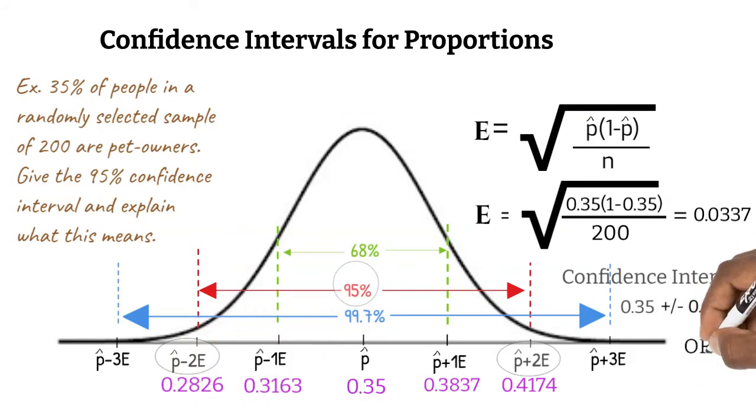Our confidence interval can also be given as 0.2826 is less than P, which is less than 0.4174. We know from the normal model that 95% of proportions are in the range from 0.2826 to 0.4174. This means that we can say with 95% confidence that the true proportion is in this range.